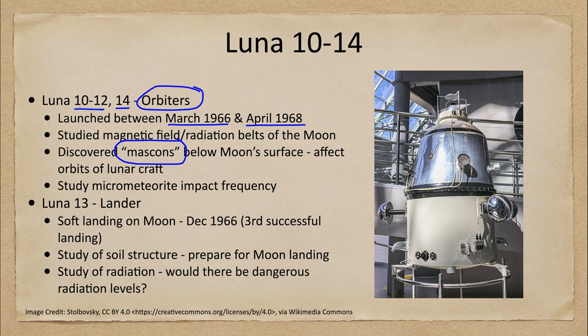These mass concentrations could often be caused by things like meteorites. A heavy meteorite burrowing itself into the surface of the moon would leave extra mass there. For the most part that would not affect anything else; however, when you have a craft in orbit close enough, those would affect the overall gravitational field of the moon and could have major impacts on craft trying to land on the moon.